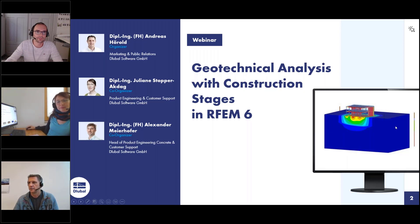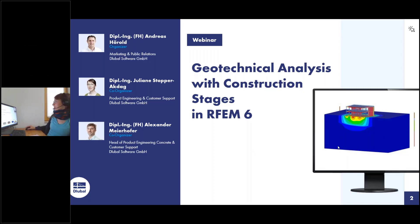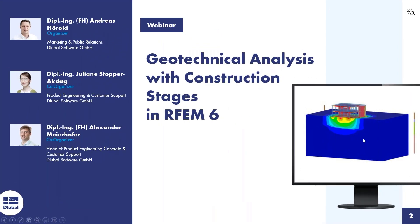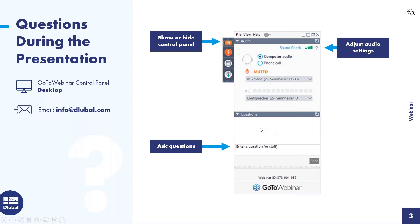We can switch off our webcams so attendees can see the full screen. You can ask questions via the control panel on the right side of your screen. You can show or hide it with the arrow. If you don't get an answer during the webinar because there are too many questions, you will get an email afterwards. You can also watch the entire webinar and then email questions to info at global.com. I hand over the screen to Juliane.